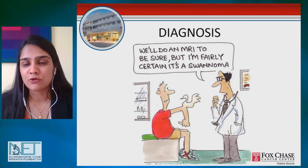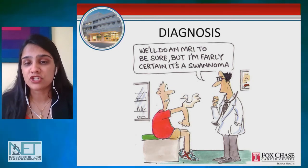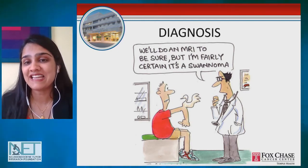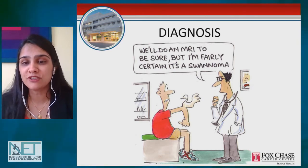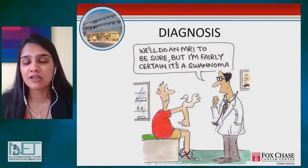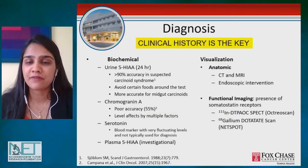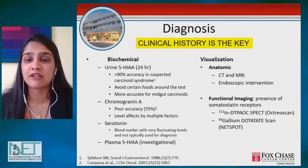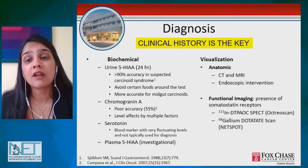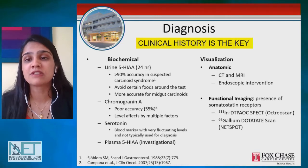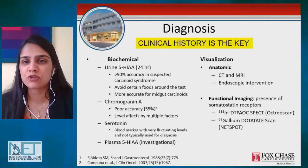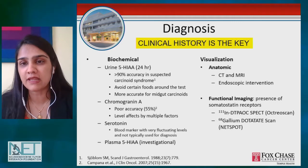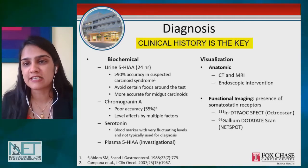Let's talk about the diagnosis of this disease. Unfortunately, the diagnosis takes a long time — some patients take up to eight or ten years before we finally find out what the problem is. Clinical history is the key: someone suspects carcinoid syndrome based on the symptoms the patient provides, and as a result, additional testing is done.